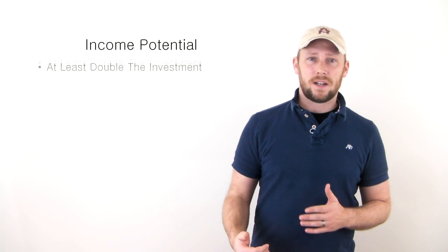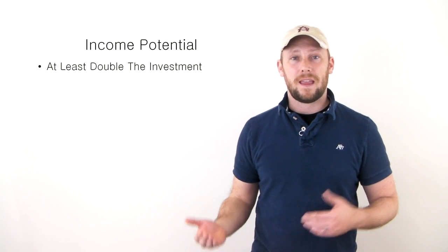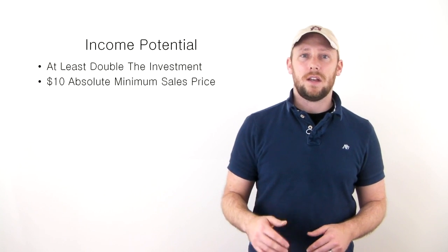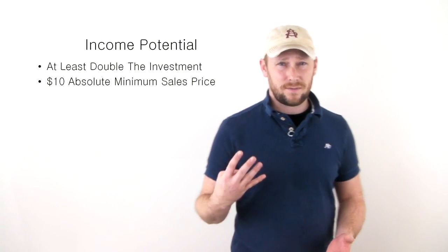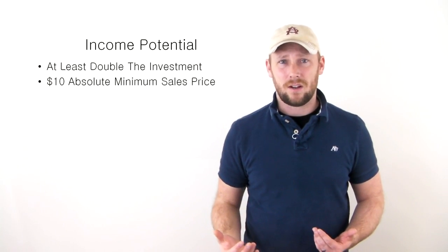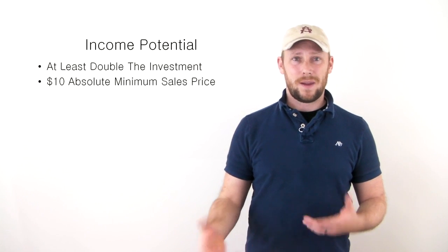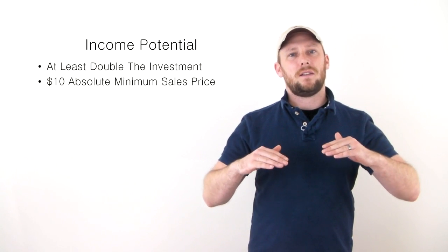We'll start with the most important, so let's start with income potential. For my own personal retail arbitrage business, I focus on items that I can double my money on and that are greater than $10. The reason being is if I find a $2 item that I can double my money on, that's a $4 item, Amazon's going to eat that all up in fees, and I'm not going to make any money.